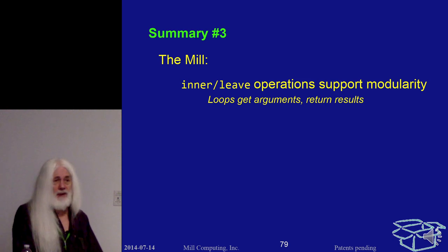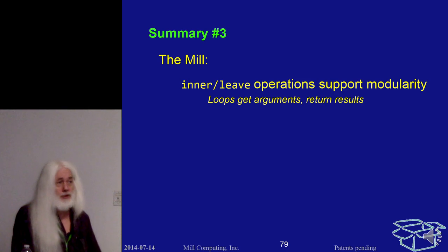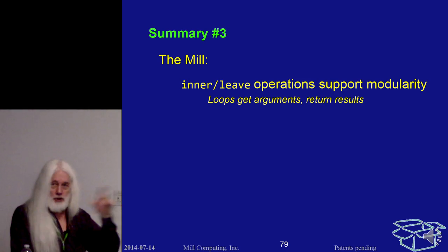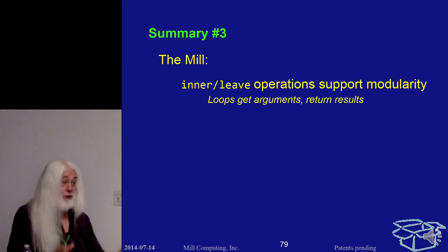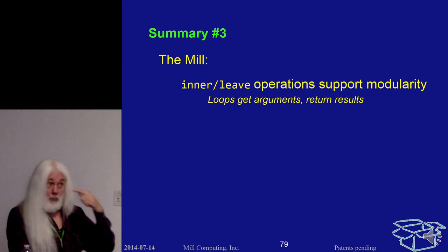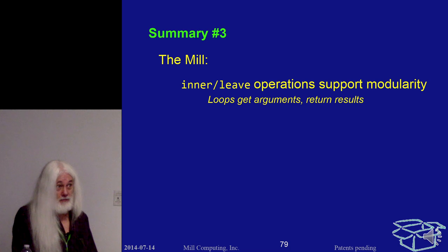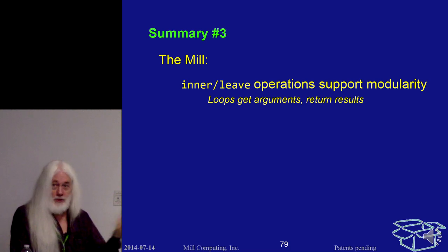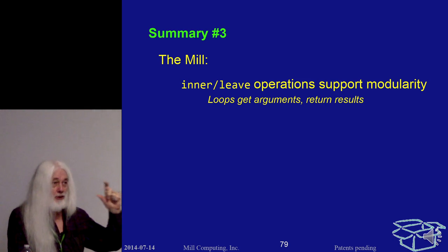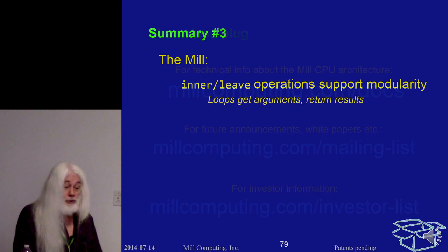We've got benchmarks. I was looking at one just yesterday — the eight queens classic benchmark. The inner loop of that, searching the chessboard table to see if you can place a queen, is one instruction with 23 operations. Look at eight queens running on any other machine and see how long the inner loop takes. In any case, thank you, and I'm open for questions.